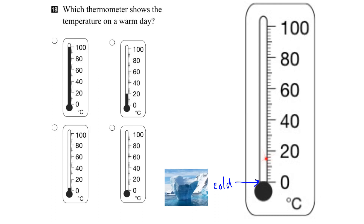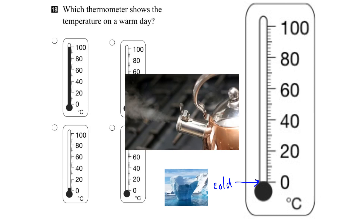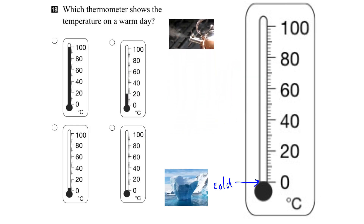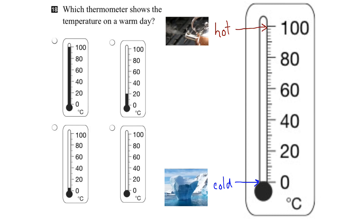Let's go to the other extreme — all the way up to 100 degrees Celsius. What do we know about 100 degrees Celsius? Well, that's where water boils. Let's bring in something that represents water boiling, like water in a kettle — you can see the steam. We can shrink that down and move it right up to the top. We'd consider that hot, so something really hot would be right up here at 100 degrees Celsius.